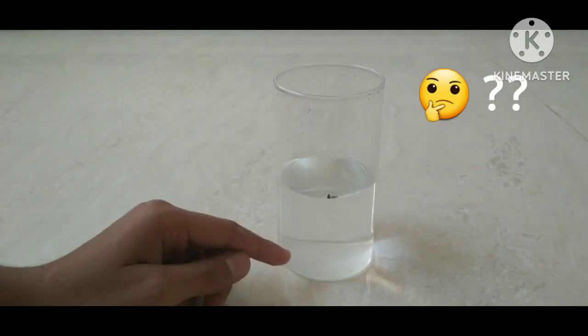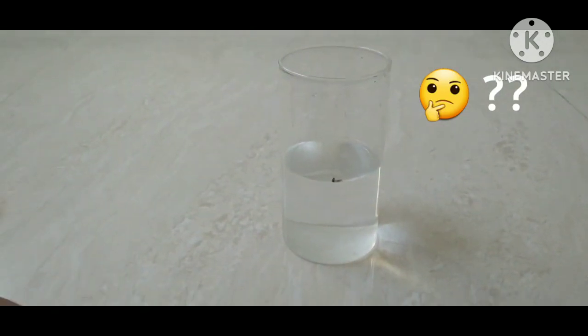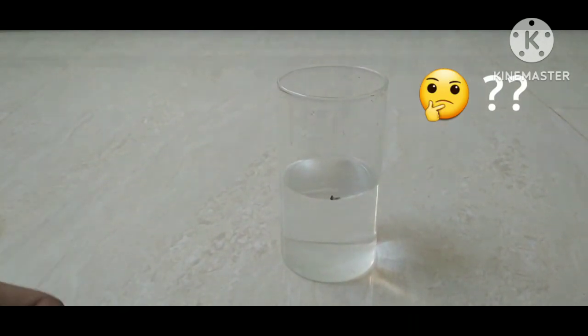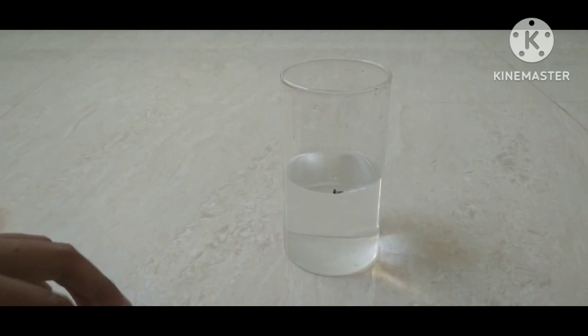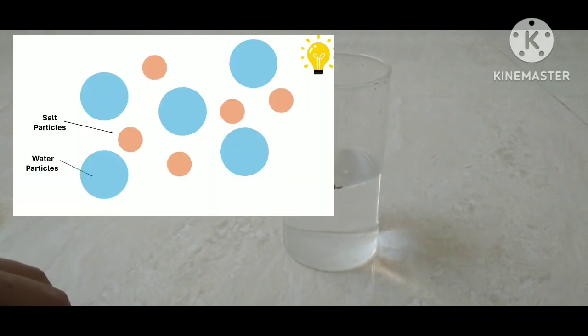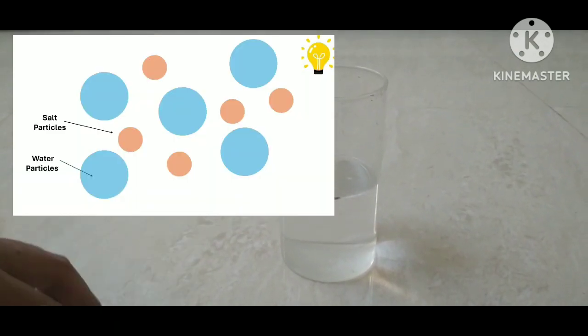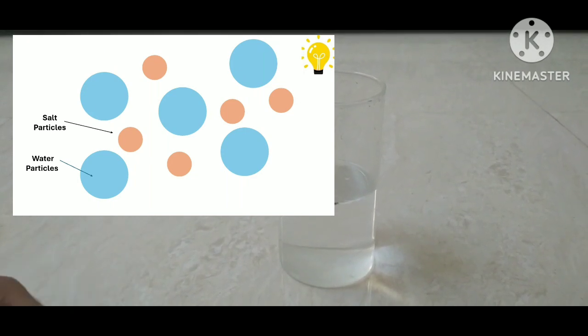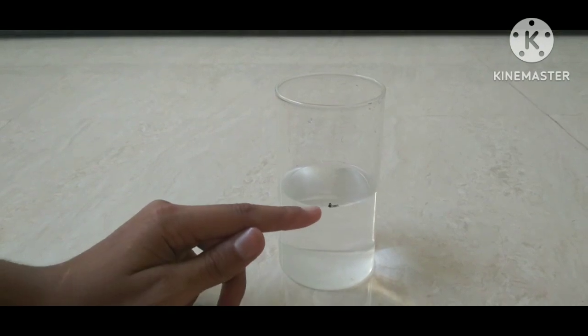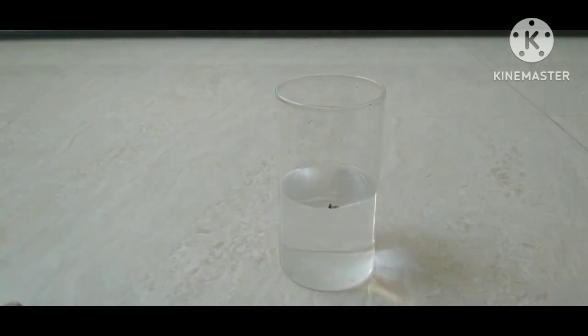But the salt disappears! Why? It is because water particles have space in them, and it is filled by the salt particles. That's why the salt disappeared and the water level goes to its original position. Thank you.